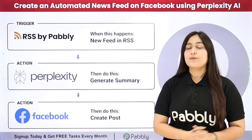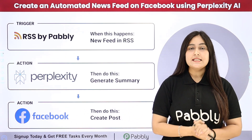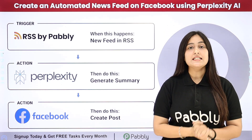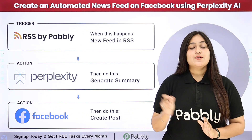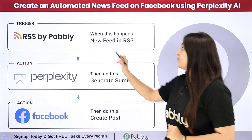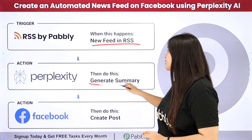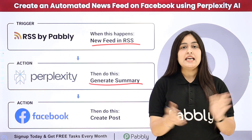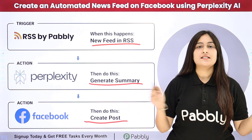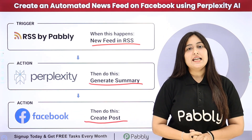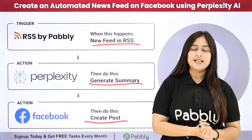To get the latest news I am going to use RSS by Pabbly. RSS stands for Really Simple Syndication and is used to get updated and latest news from the websites you are interested in. Whenever we receive a new feed in RSS, a summary will be generated using Perplexity AI and automatically posted on my Facebook page. To build this connection I need to connect these applications using an automation software named Pabbly Connect.